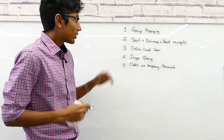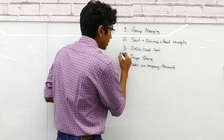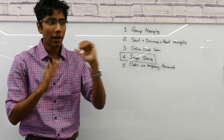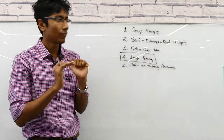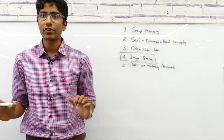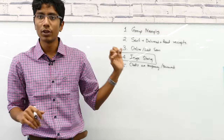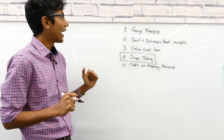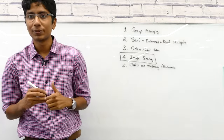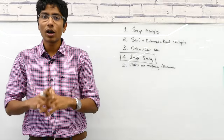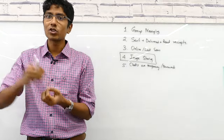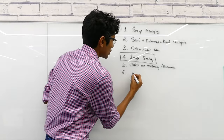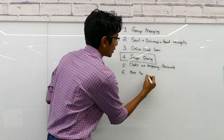Image sharing has already been covered on this channel — have a look at the Tinder video, which explains how images can be stored and retrieved in a sensible engineering way. So we're left with four features for this video, and the first one we'll pick up is group messaging. But before that, we need to discuss how one person sends a message to another — that is, one-to-one chat.